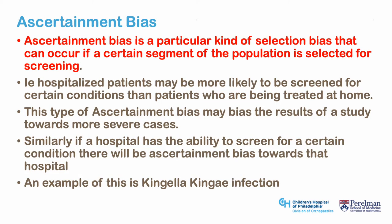Ascertainment bias is a specific kind of selection bias where only a certain segment of the population is chosen for screening. Hospitalized patients may be more likely to be screened for certain conditions than patients treated at home, biasing results towards more severe cases. Similarly, if a hospital has the ability to screen for a condition that others do not, there will be ascertainment bias towards that hospital. This has been seen with Kingella kingae infection — only certain hospitals have the technology to diagnose it, so it could be misinterpreted that these hospitals have a higher infection rate.